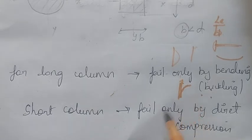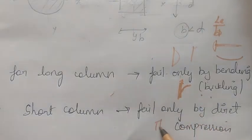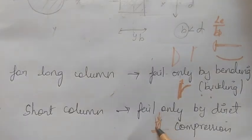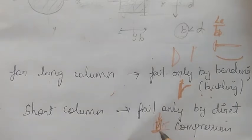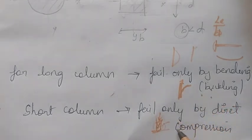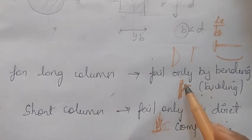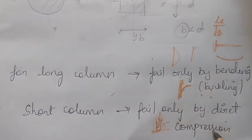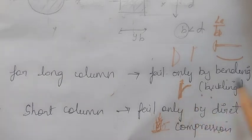Short columns fail only by direct compression. For a short column, the load causes direct compression — because of its shorter length there is no buckling. The failure is a sudden crushing failure. So the key difference: long column fails by buckling; short column fails by direct compression.